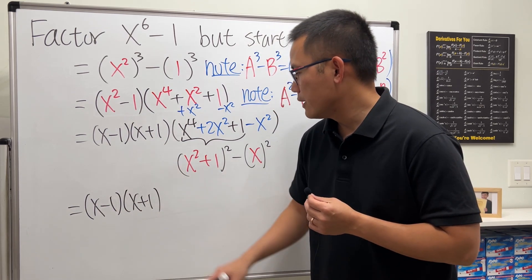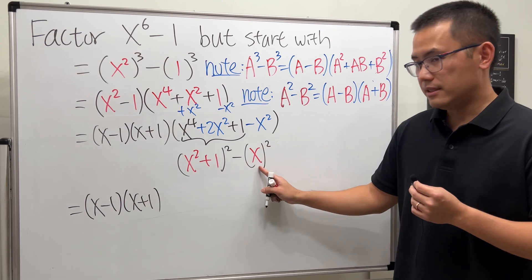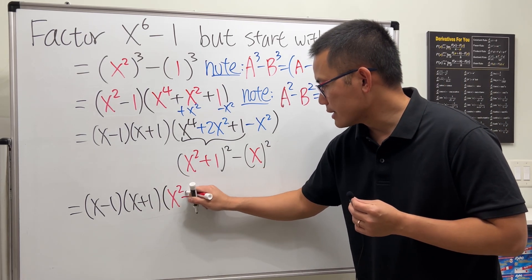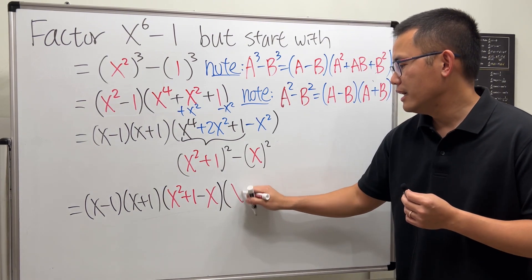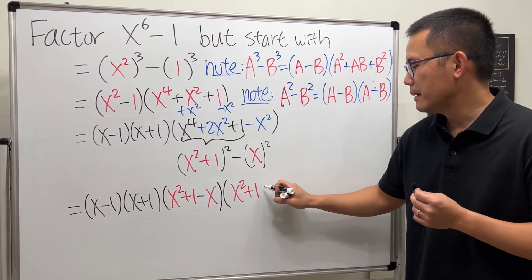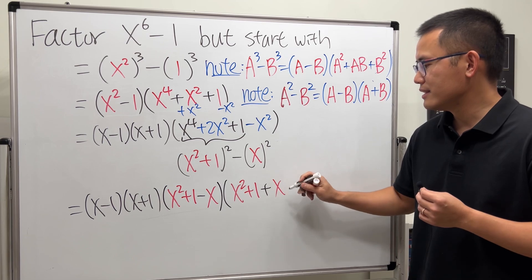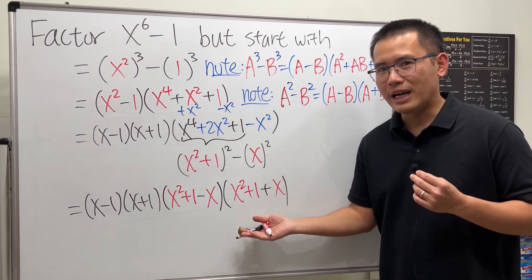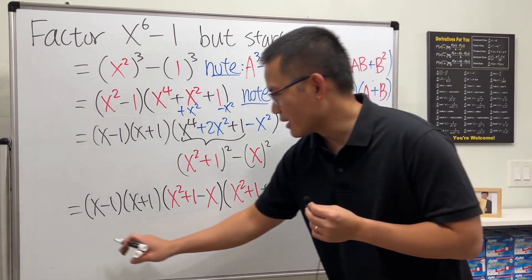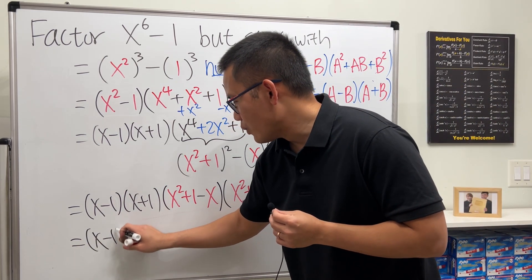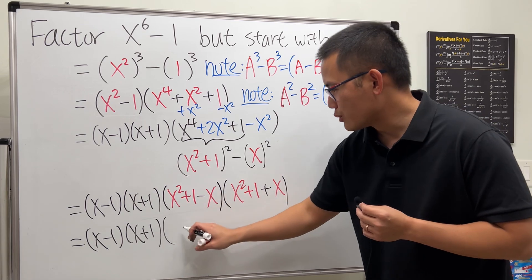And I'm just going to write this down: we have (x - 1)(x + 1). This is the a, this is the b, so we will have (x² + 1 - x) times (x² + 1 + x). And that's exactly what we had earlier.